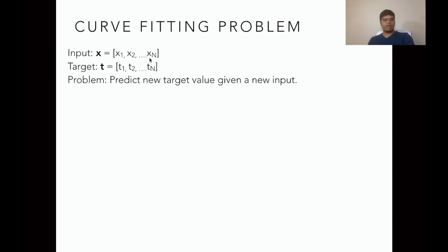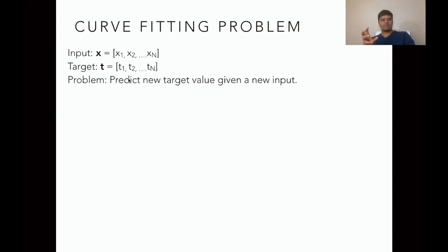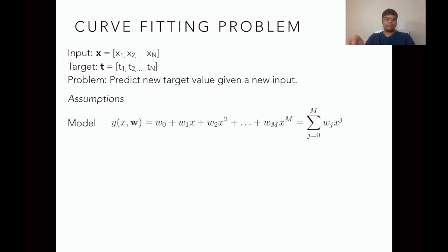For each of the given inputs we also have the available target values — we know t1, t2, and so on; these values are given to us. The problem lies in predicting the new target value whenever a new input is presented. To solve this problem we should make some assumptions. The first assumption is about the model — what is the relationship between input and output variables. In this case we model that relationship as a polynomial: y(x, w) is a polynomial of mth order. Using this model, the problem lies in identifying the weights of the model.